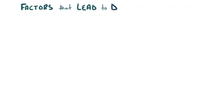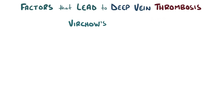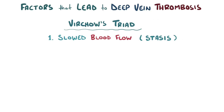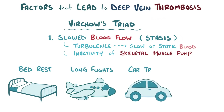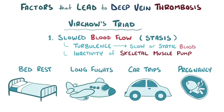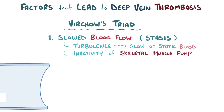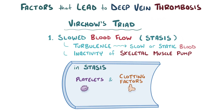There are three main factors that lead to a deep vein thrombosis, which are referred to as Virchow's triad. The first factor is slowed blood flow, also called stasis, in the veins. Typically blood continuously flows smoothly through the blood vessel, but if the blood flow becomes turbulent, the linear flow is disrupted and slow or static pockets of blood are formed. Stasis can also happen during long periods of inactivity of the skeletal muscle pump, like bed rest or long flights and car rides, or even during pregnancy, when a growing baby compresses nearby veins. During stasis, platelets and other clotting factors contact the endothelium, and prolonged interaction leads to clotting factor adhesion and ultimately activation of the clotting cascade.